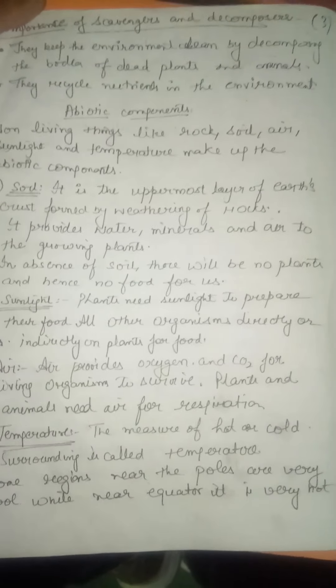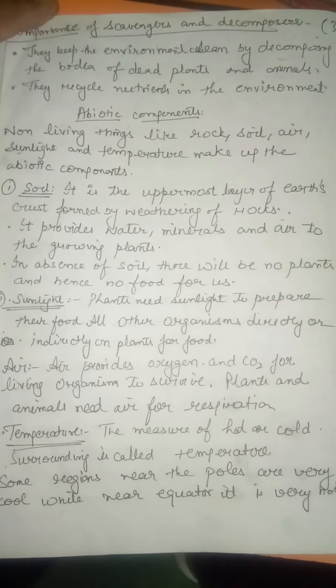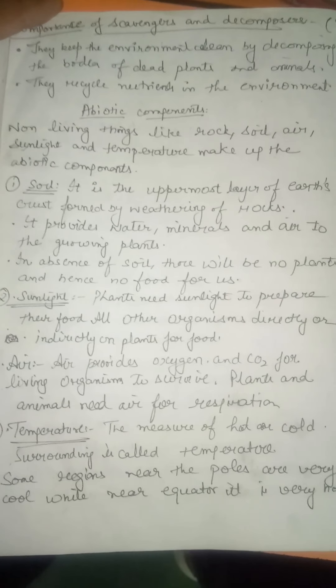The next abiotic component is sunlight. Sunlight is very important for plants because it plays an important role in the process of photosynthesis. For human beings, sunlight is also important because it provides Vitamin D, which is needed for the growth and development of bones.